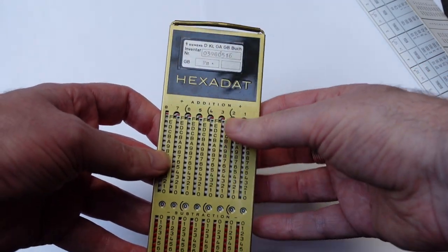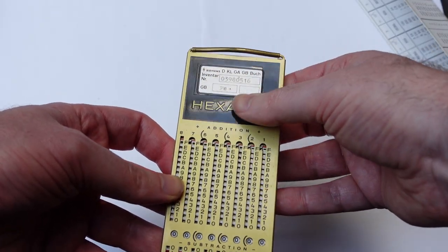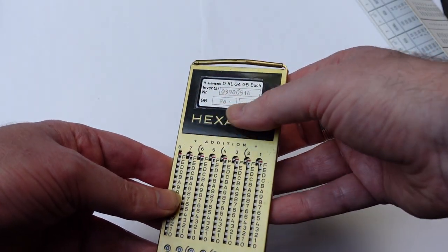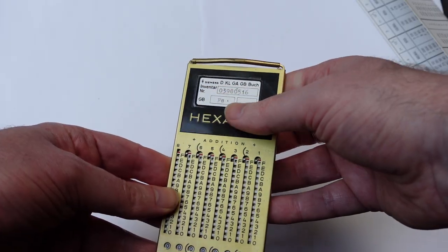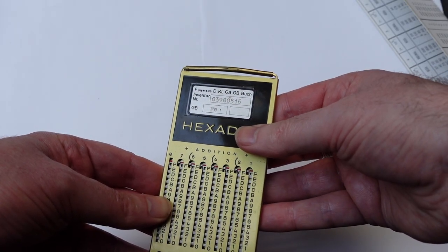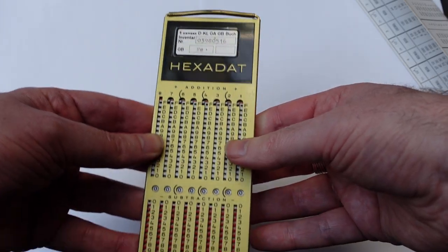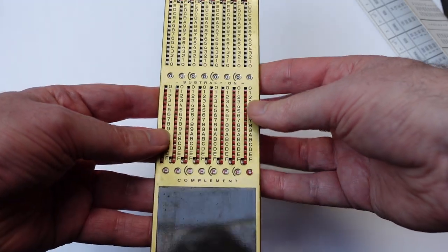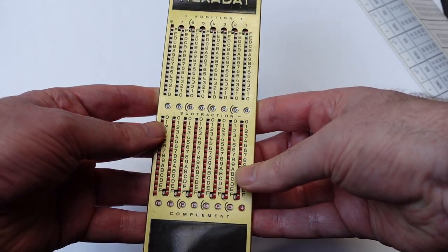And here it is. It has a label at the top for Siemens. So presumably that was used in that company there with an inventory number. Anyway, here's the adiator itself.